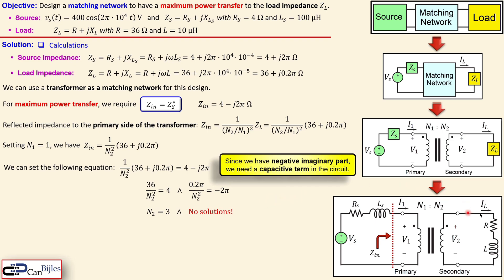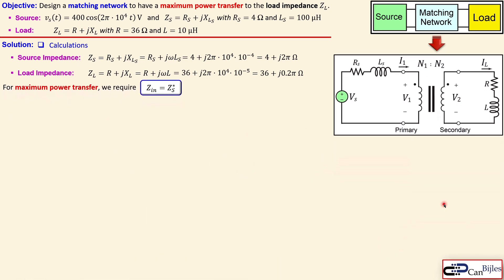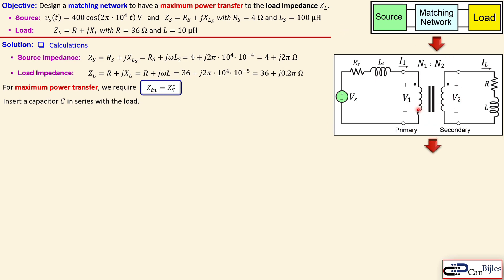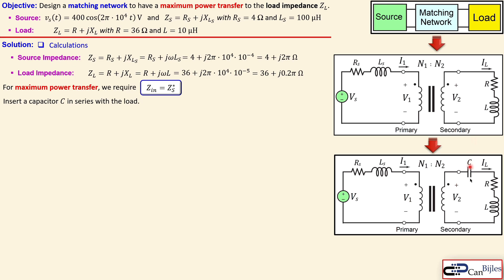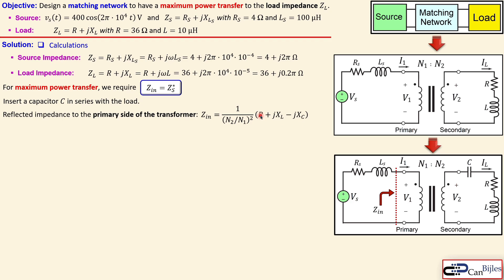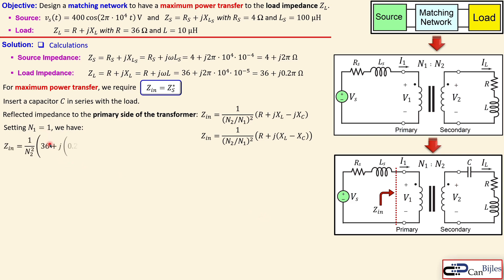Since a negative imaginary part refers to a capacitive term, we need to add a capacitor to the load. We will insert a capacitor in series with the load. This modifies the circuit, and the new Z_in reflected to the primary side now includes the resistor, inductor reactance, and capacitor reactance (−j/ωC). We set N1 = 1 and proceed.